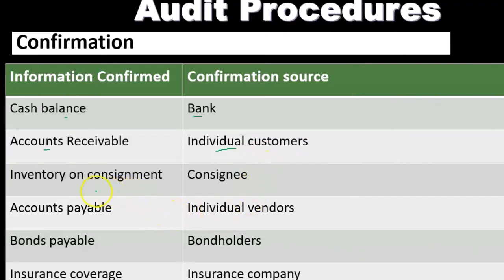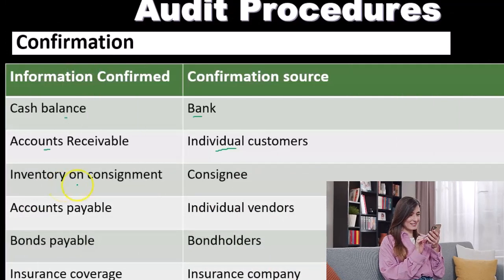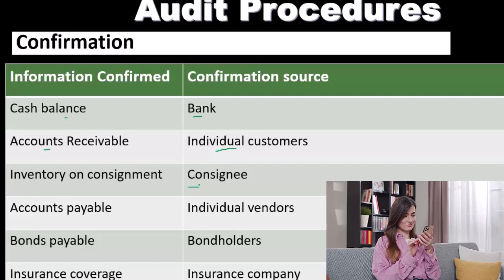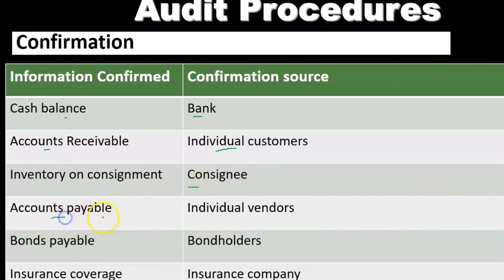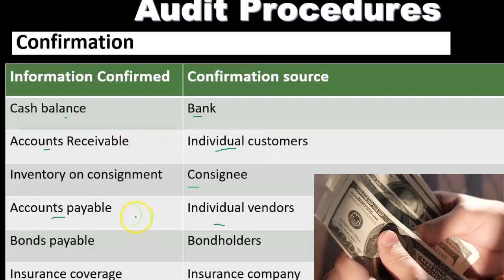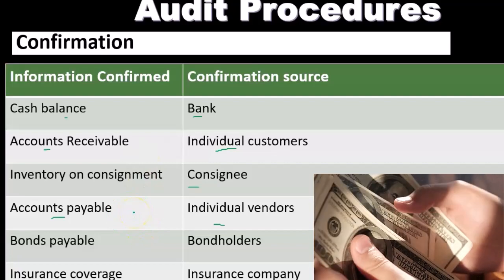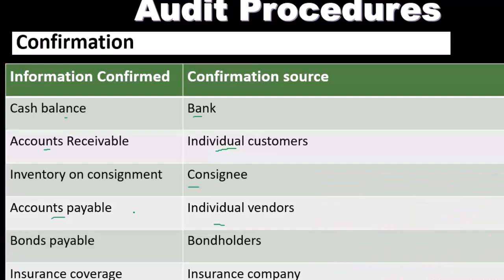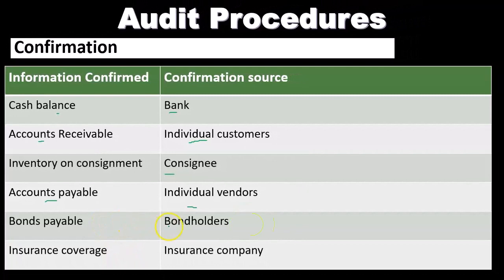Other confirmation types include: inventory on consignment held elsewhere, where we might confirm with the consignee; accounts payable, where we could send confirmations to individual vendors — though we're more skeptical of accounts receivable being overstated than accounts payable; bonds payable with the bondholder; and insurance coverage, where we might contact the insurance company.